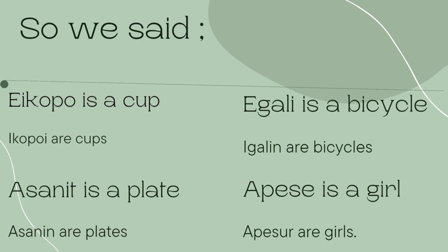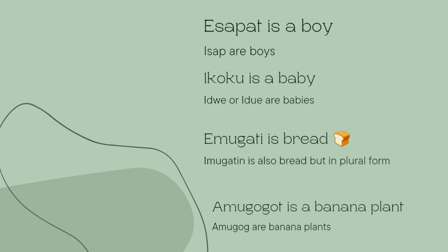Asanit is a plate. E gali o baisko. Apesse — e gali o apesur — girls.